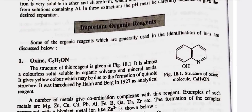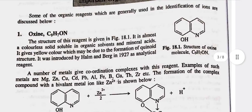Important organic reagents: Some of the organic reagents which are generally used in the identification of ions are discussed below. First, Oxine (C9H7ON) — the structure of this reagent is given in figure 18.1. It is almost a colorless solid, soluble in organic solvents and mineral acids. It gives yellow color which may be due to the formation of quinoid structure. It was introduced by Hamm and Berg in 1927 as an analytical reagent.